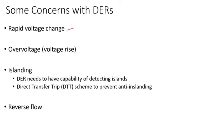You have over-voltage and voltage rise, which I'll talk about in detail. There's voltage rise from the generator back to the feeder, and islanding issues — when you lose the utility system, the DER needs to have the capability of detecting islands.